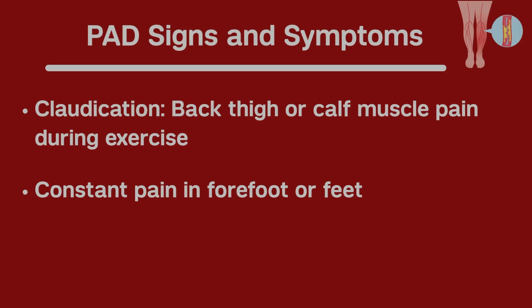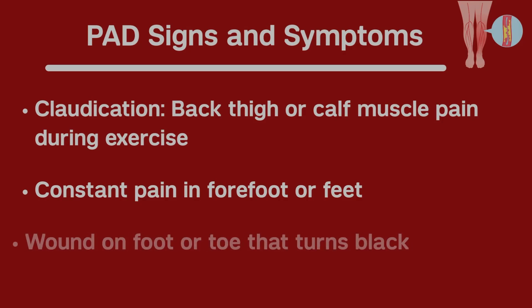Finally, in patients who have some of these risk factors and develop a wound on their foot or an area of the toe that becomes black — what we call gangrene — those are very serious signs, and those patients generally need to be treated with a procedure to improve their blood flow. Otherwise, they're at substantial risk of losing that toe or losing the limb as a whole.